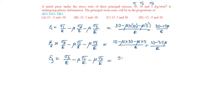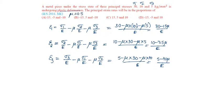Sigma 3 is 5 minus mu into sigma 1 is 30 minus mu into sigma 2 is 10 by E, which is equal to 5 minus 40 mu by E. Given that it is undergoing plastic deformation, mu is equal to 0.5. Substituting: epsilon 1 becomes 22.5 by E, epsilon 2 becomes minus 7.5 by E, and epsilon 3 becomes minus 15 by E.